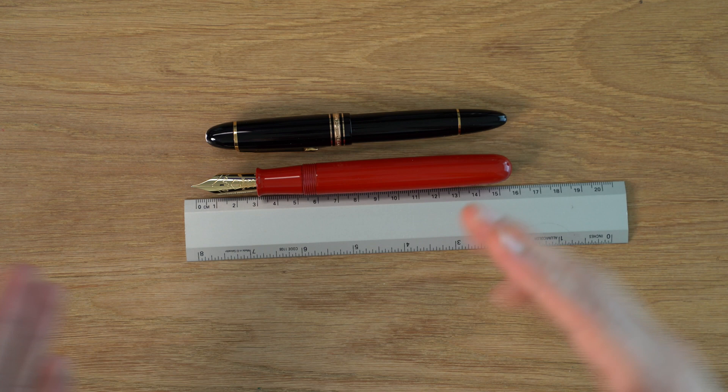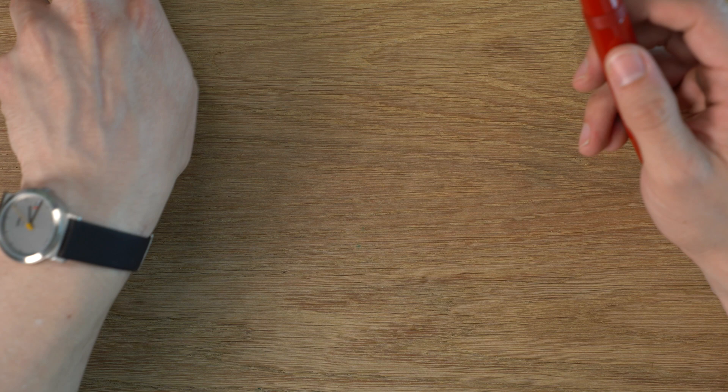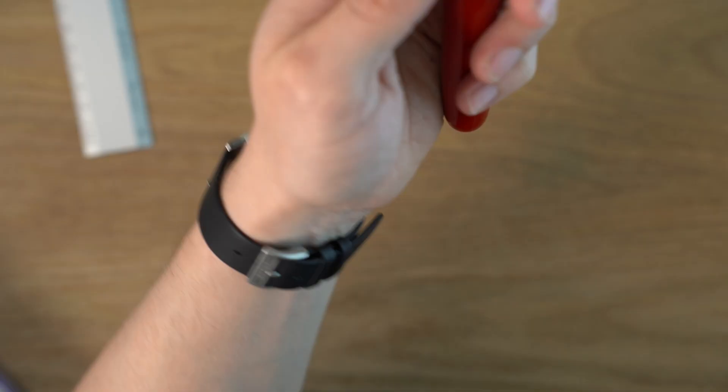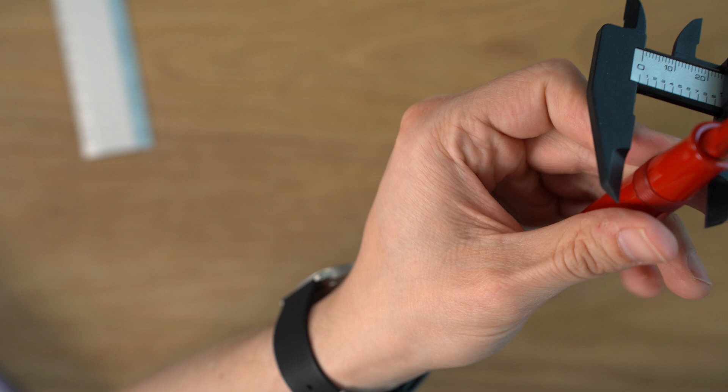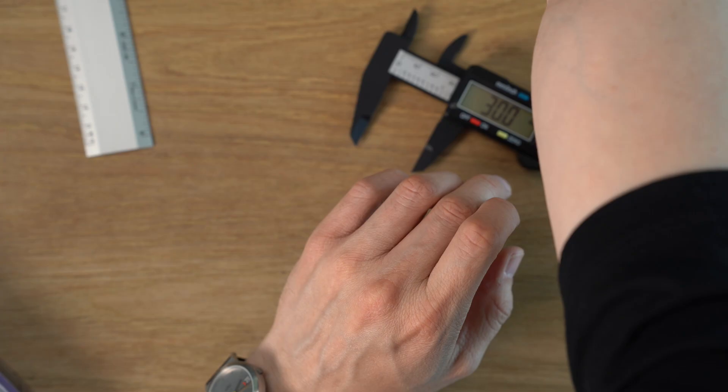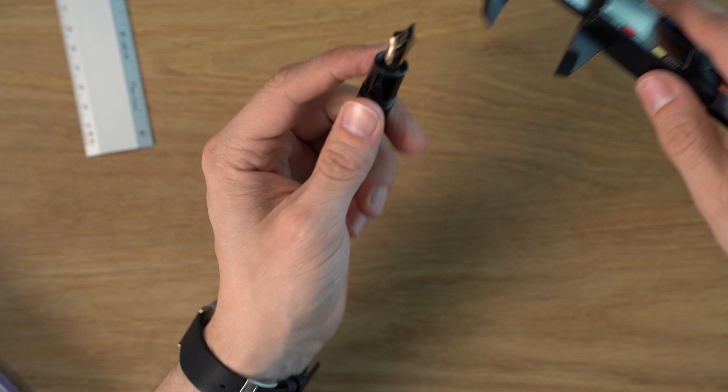Now in terms of the width, I'm curious to see how this compares to the 149. It tapers, so I'll do the narrowest part first. It's about 13.9 millimeters, so that's very wide. And then right behind the threading here, 15.1. And compared to the narrowest part of this, which is pretty close to being straight, 13.8. So this is actually a little bit thinner. But anyway, very thick grip section overall.